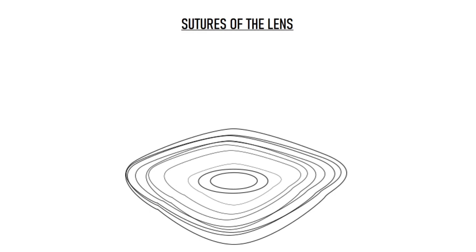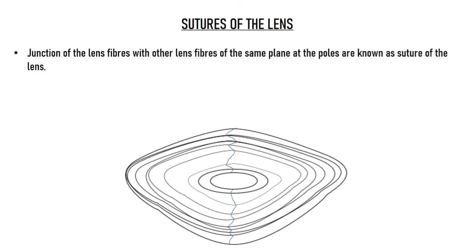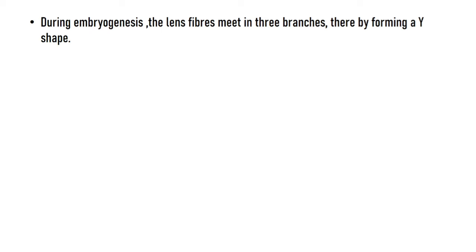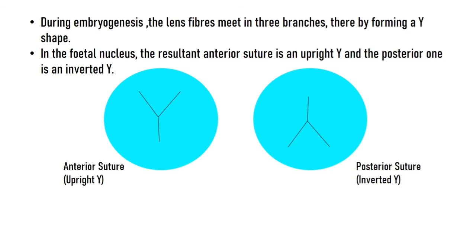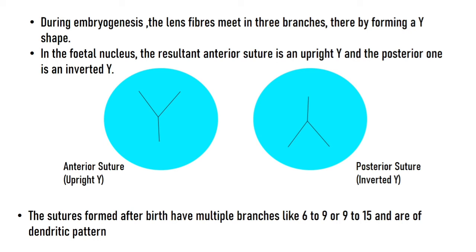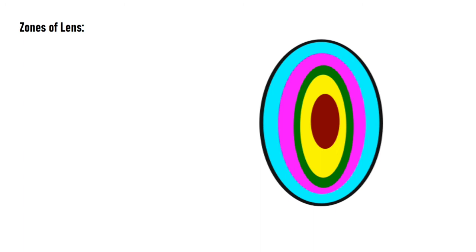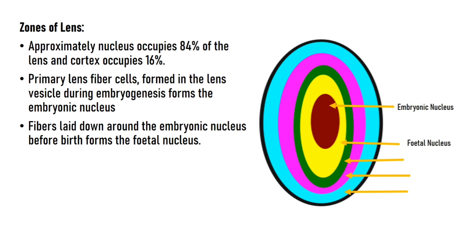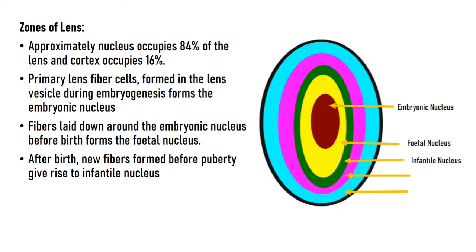Histologically there is no difference between these parts, as they all derive from the lens epithelium. Sutures are the junctions where lens fibers from one end meet lens fibers from the opposite end in the same plane. The anterior suture is formed by the apical parts and the posterior suture by the basal parts of the lens fibers. During embryogenesis, lens fibers meet in three branches forming Y-shaped sutures — an upright Y anteriorly and an inverted Y posteriorly in the fetal nucleus. Sutures formed after birth have 6 to 9 or 9 to 15 branches in a dendritic pattern. The nucleus occupies about 84% of the lens and the cortex about 16%. Primary fibers make the embryonic nucleus; fibers laid before birth form the fetal nucleus; fibers from birth to puberty form the infantile nucleus; and fibers after puberty make the adult nucleus.